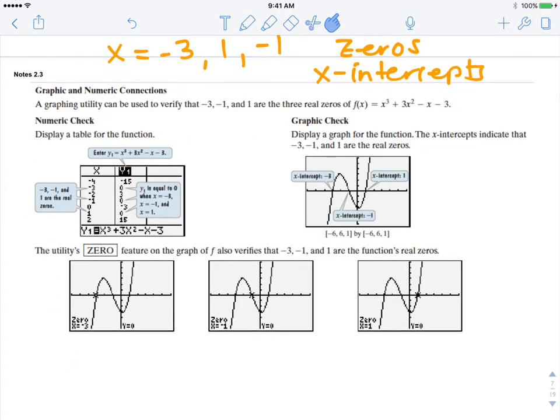They will also be your x-intercepts when we graph them. Looking on the next slide, what this does is it shows you, with the graphing calculator, if you were to type that function into the graphing calculator, here would be the shape of the graph. This is our cubic function. It's the shape of a snake. Here are the three x-intercepts: positive one, negative one, and negative three. Here's the x-intercept, the x-intercept, and the x-intercept zoomed in.